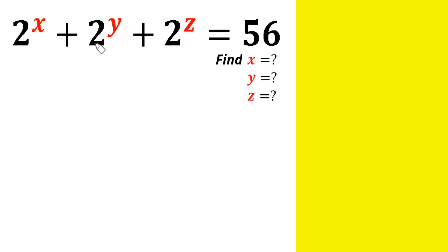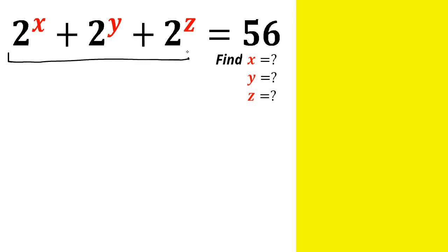Many don't even know where to start from and what's going to be the first step. One beautiful thing about mathematics is it's all about the first step — once you know the first step, you already know what's going to be the end result. It might come to a lot of people's minds to simplify the left-hand side by applying a certain index rule, having something like 2 raised by the power of x plus y plus z equals 56.